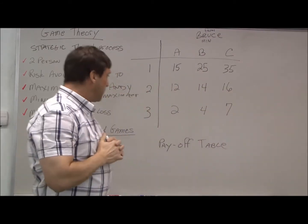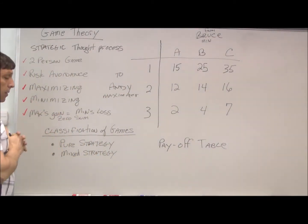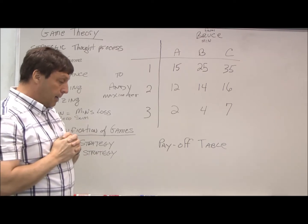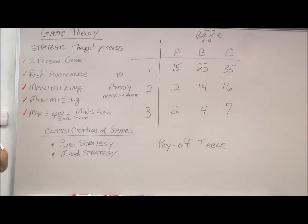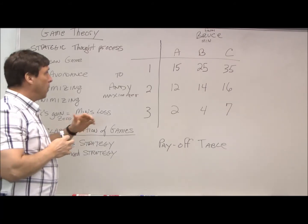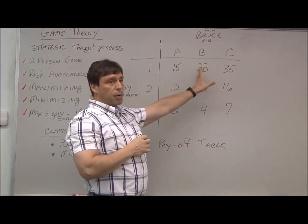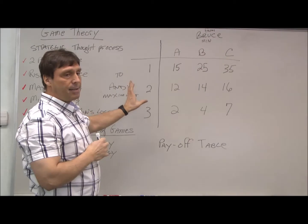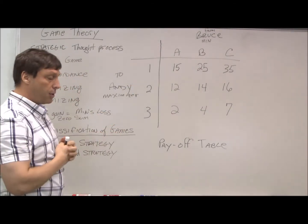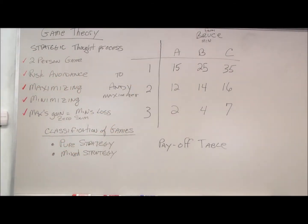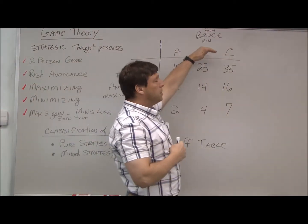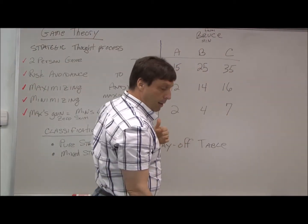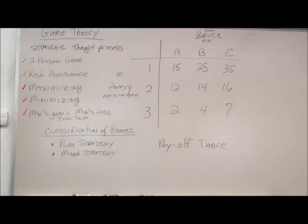Now with the maximizer, what they're trying to do is maximize their gain or their utility. They're trying to get the most they can. What the minimizer is trying to do is cause this person to get the least amount because there's competition going back and forth. So Andy is trying to maximize his profit. Bruce is trying to minimize Andy's profit or cause Andy to minimize it as much as possible.